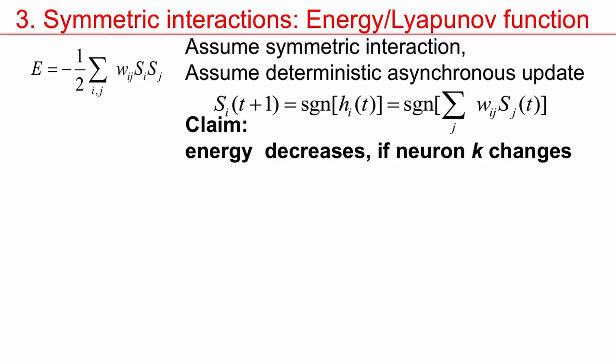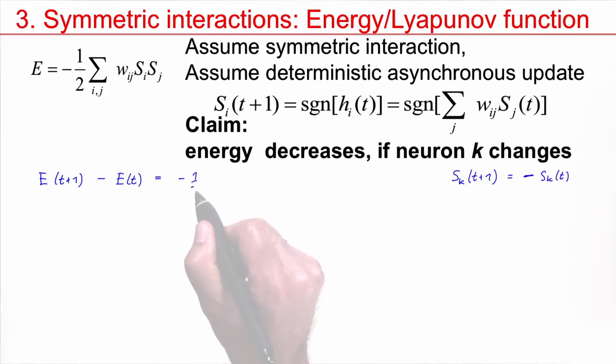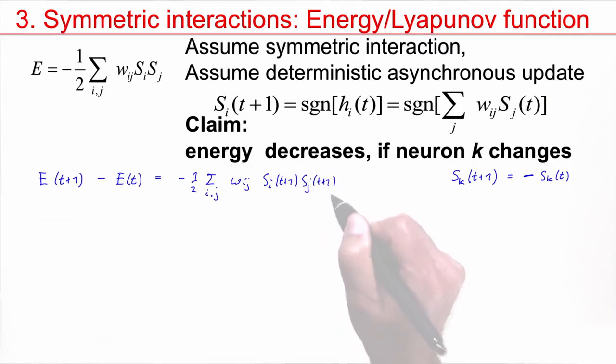So let's prove this. So I start with my energy function. Since we assume asynchronous update, only one neuron changes. Let us consider this neuron and let's call it K. That means neuron K at time T plus 1 has changed. It's different from the value at time T. But these are plus minus 1s. The only way to be different is that it's the same with the minus sign. If it was plus 1, it will become minus 1. If it was minus 1, it will become plus 1. Now let's look at the energy and let's compare the energy at time T plus 1 with the energy at time T.